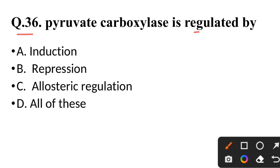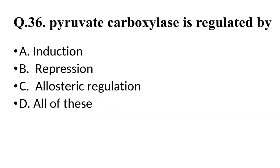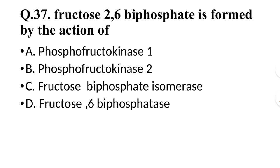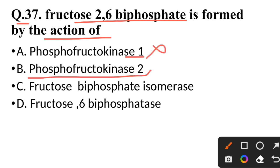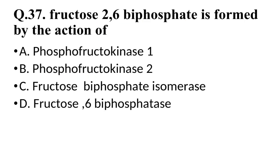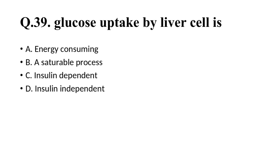Question 36: Pyruvate carboxylase is regulated by — induction, repression, allosteric regulation, all of these — correct answer is all of these. Question 37: Fructose-2,6-bisphosphate is formed by the action of — not phosphofructokinase-1 — correct answer is phosphofructokinase-2.